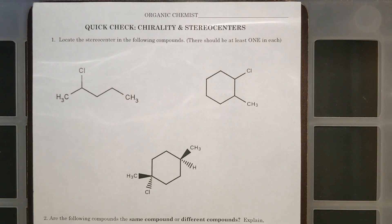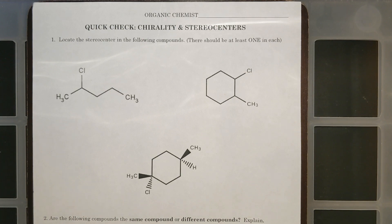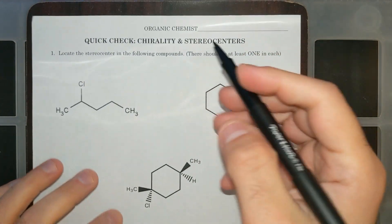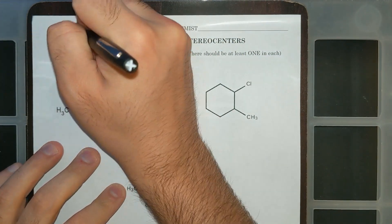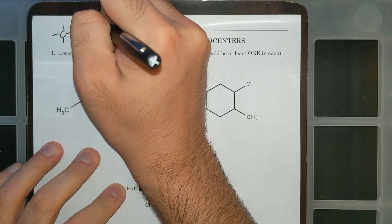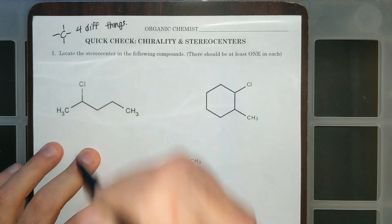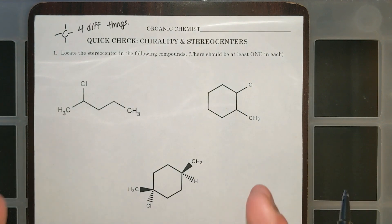Hey, Organic Chemistry. The best way to make sure you can understand how to identify chirality, chiral molecules, or stereocenters is through practice. A chiral carbon or a stereocenter is a carbon that has four different things attached to it. It could also be a nitrogen with four different things — that would be called a stereocenter — but if I'm talking about a chiral carbon, I'm looking at my carbons.